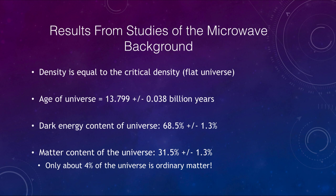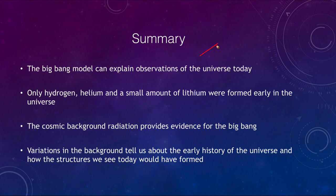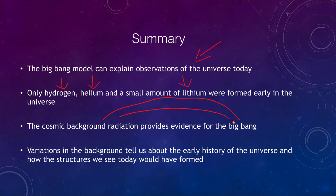In summary: the Big Bang model explains the observations we see of the universe today. In the early universe we formed hydrogen, helium, and maybe a small amount of lithium — the rest was formed in stars. The cosmic background radiation provides evidence for the Big Bang, and variations in this background tell us about the early history of the universe, how the structures we see today formed, and can also tell us the ultimate fate of the universe.